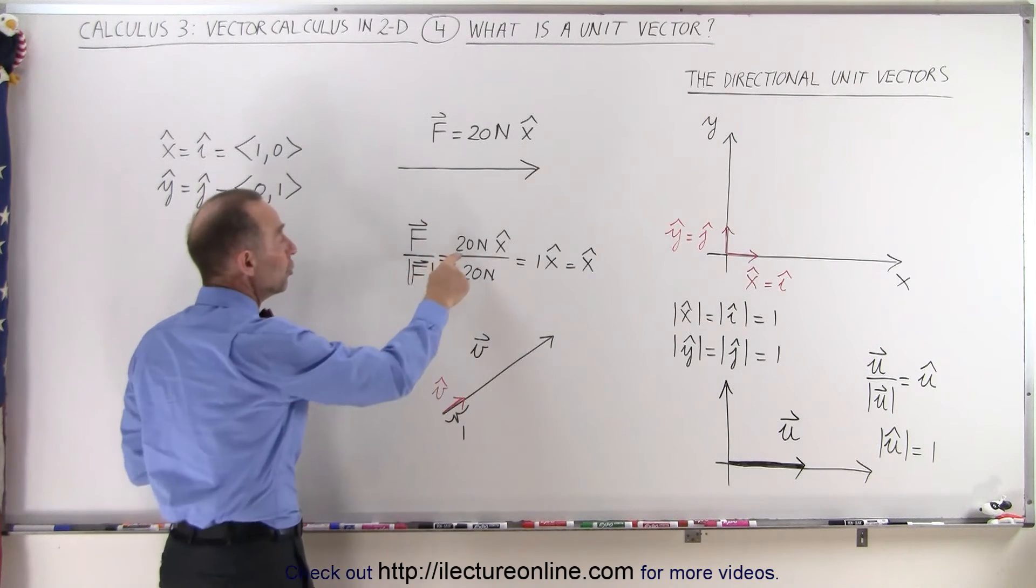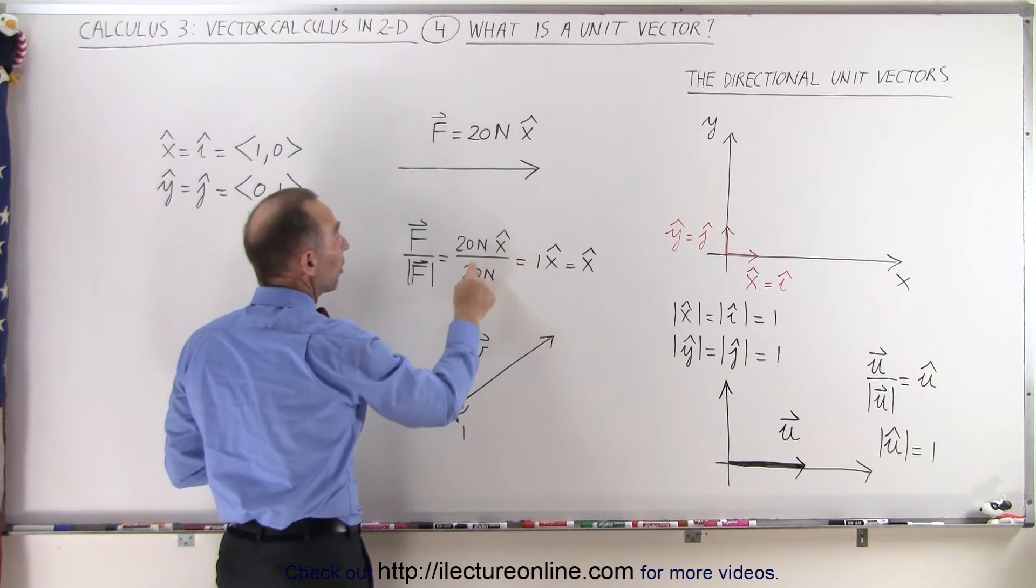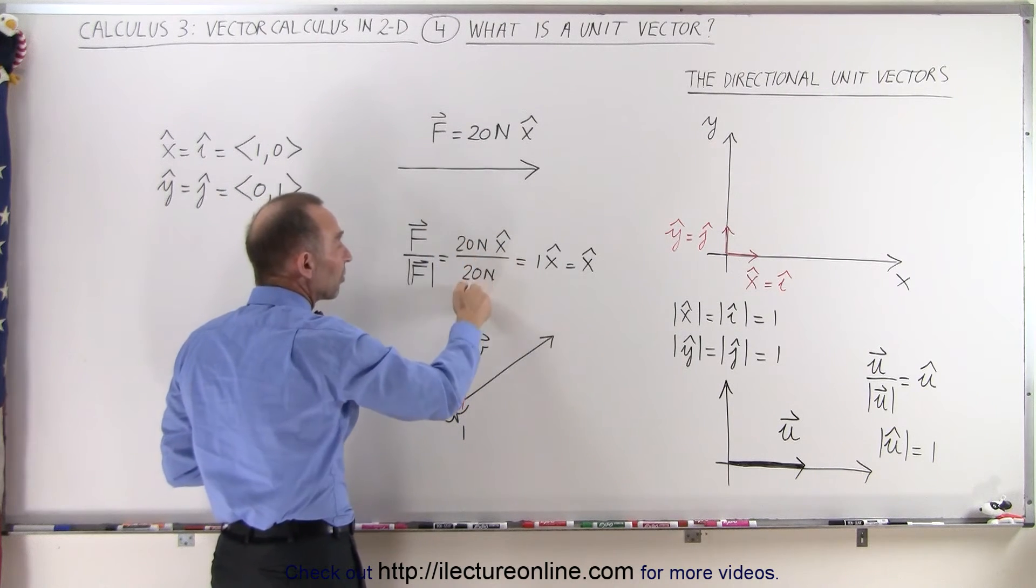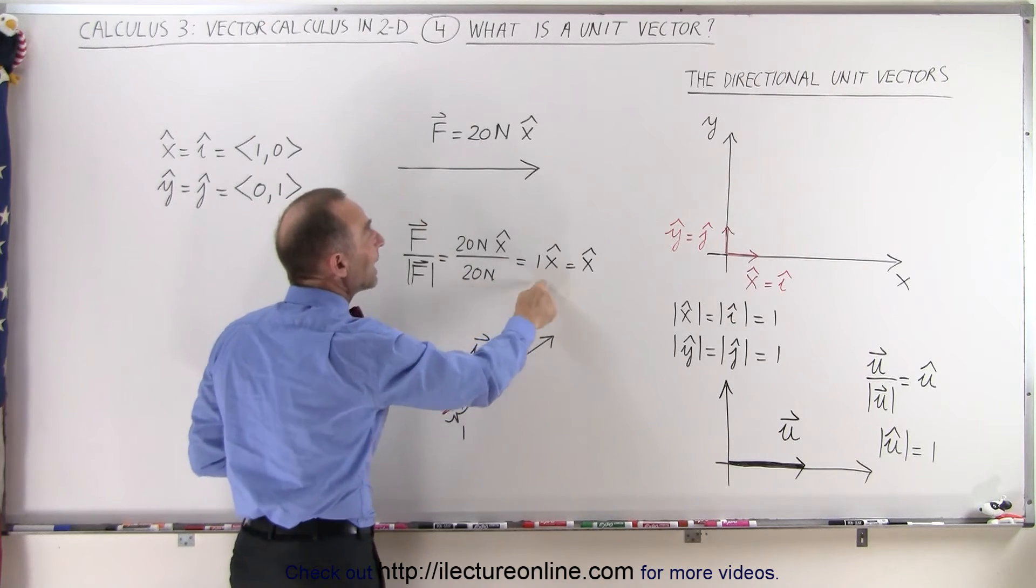Well, notice we take 20 newtons in the x direction, divide it by 20 newtons, the newtons cancel out, the 20s cancel out, you simply get 1 in the x direction.